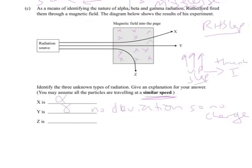So X must be the alpha particle, because an upward deviation shows a positive charge, and the alpha particle has a positive charge, 2+.